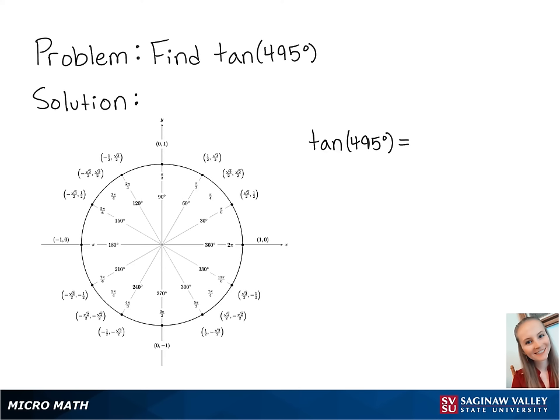For this problem, we're going to find tangent of 495 degrees. Tangent of 495 degrees is equal to sine of 495 degrees over cosine of 495 degrees.